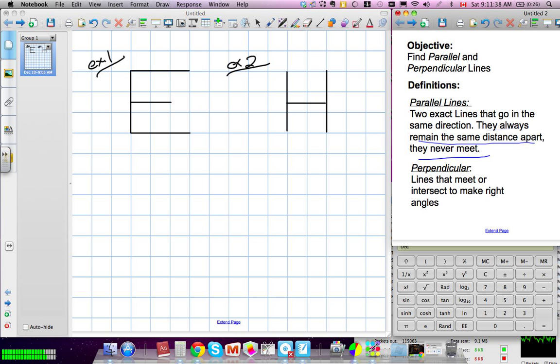Perpendicular lines are lines that meet or intersect. So meet would be like this, where they just touch. Intersect would be going right through them. And they intersect or meet to make right angles, like that. Okay, does that make sense?